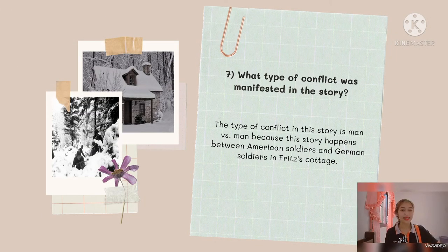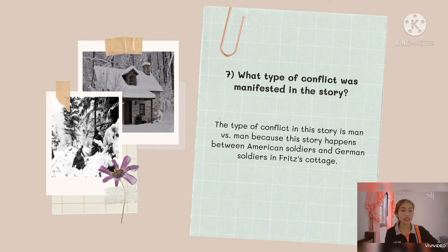The 7th question: what type of conflict was manifested in the story? Our answer is the type of conflict in this story is man vs. man, because this story happens between American soldiers and German soldiers in their fierce quarrel.